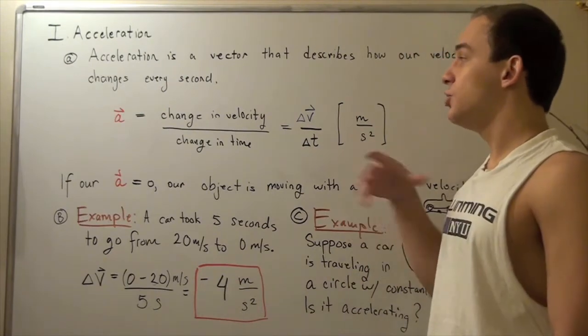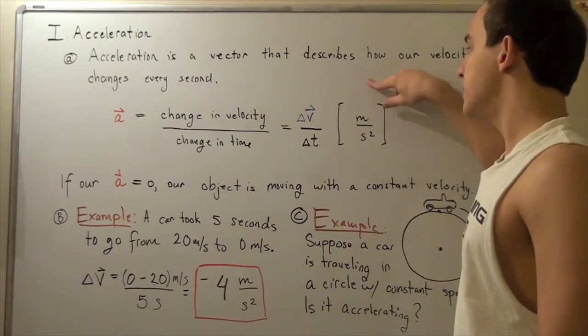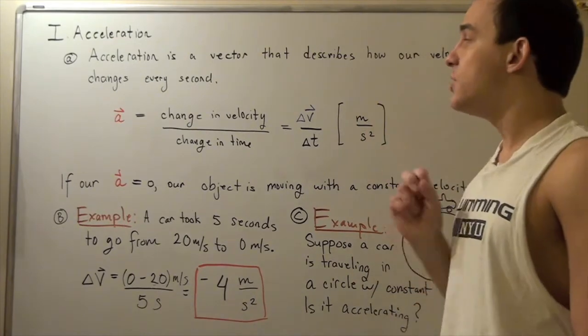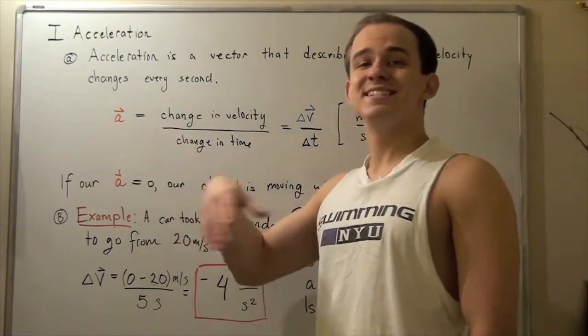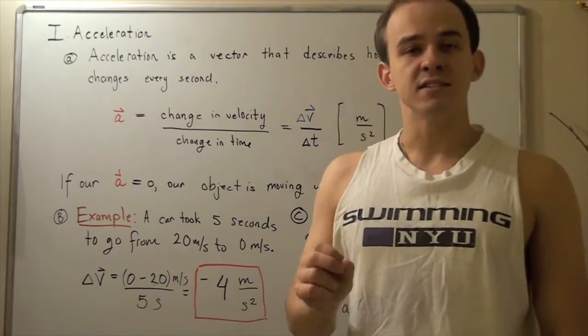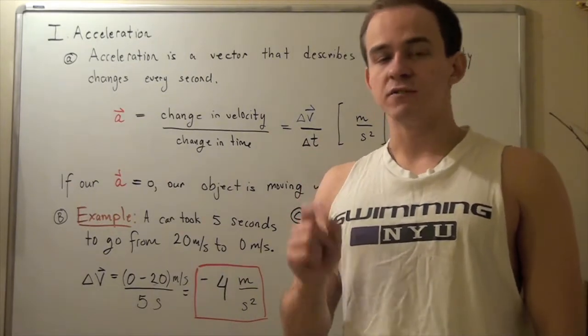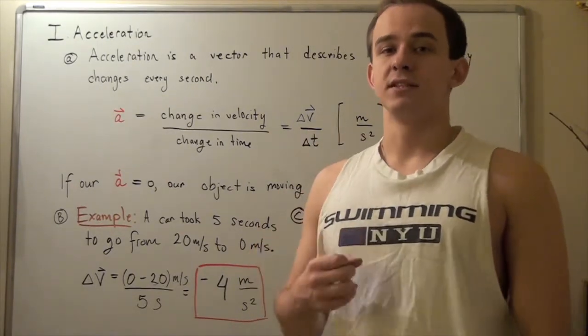The units of acceleration is meters per second second, or meters per second squared. Note that if our acceleration is zero, that means our object is moving with a constant velocity. So the magnitude as well as direction of our velocity stays the same—it's constant.